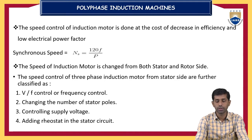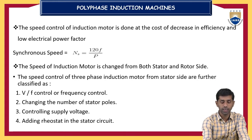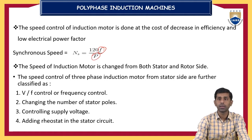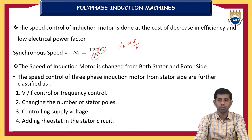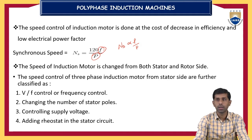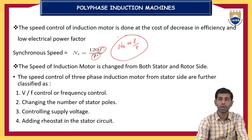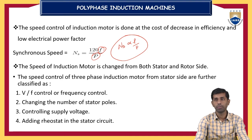The speed of the induction motor is changed from both the stator side as well as the rotor side. From the stator side, we control the frequency and also change the number of poles. The speed of the rotating magnetic field ns is directly proportional to frequency and inversely proportional to the number of poles. Rotor-side methods are applicable only for slip ring type induction motors; for squirrel cage induction motors, rotor-side speed control is not possible.